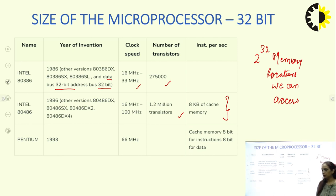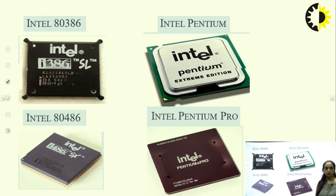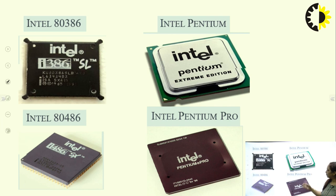The Intel 486 was invented in 1986 with clock speed ranging from 16 to 100 megahertz, 1.2 million transistors, and 8 kilobytes of cache memory. The Pentium was invented in 1993 with a clock speed of 66 megahertz, with 8-bit cache memory for instructions and 8 bits for data. These include the 80386, 80486, Intel Pentium, and Intel Pentium Pro processors.